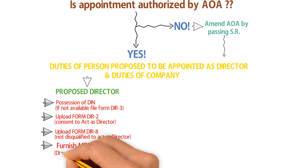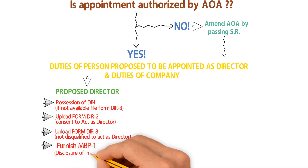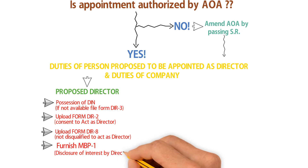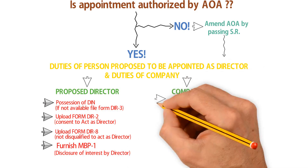The last step for the proposed director is to furnish Form MBP-1 to the company. In Form MBP-1, the proposed director discloses their interest in various entities.